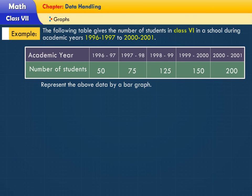Let's observe the following example. The following table gives the number of students in class 6 in a school during academic years 1996-1997 to 2000-2001. Represent the above data by a bar graph.